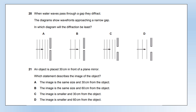Water waves pass through a gap and diffract. In which diagram will diffraction be least? To get very little diffraction, the gap must be much bigger than the wavelength. In option C, the gap is much bigger than the wavelength — that's the only scenario where this holds. In A and B the gap is smaller than the wavelength, and in D it's about the same size — all three produce significant diffraction. Only C gives very little diffraction.